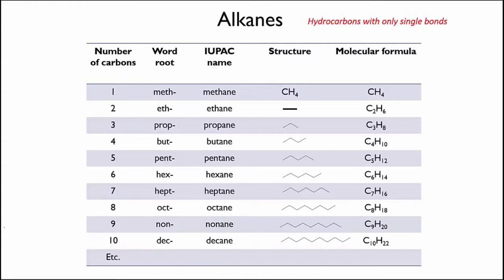Hydrocarbons that have nothing but single bonds are collectively known as alkanes. This table shows you the first ten alkanes, with one carbon being added to each successive molecule. There are a few things to note here. Firstly, the word root of each name is important. It indicates how many carbons there are in the chain, and we're going to use these roots repeatedly as we learn to name more complex molecules, so you should memorise them.